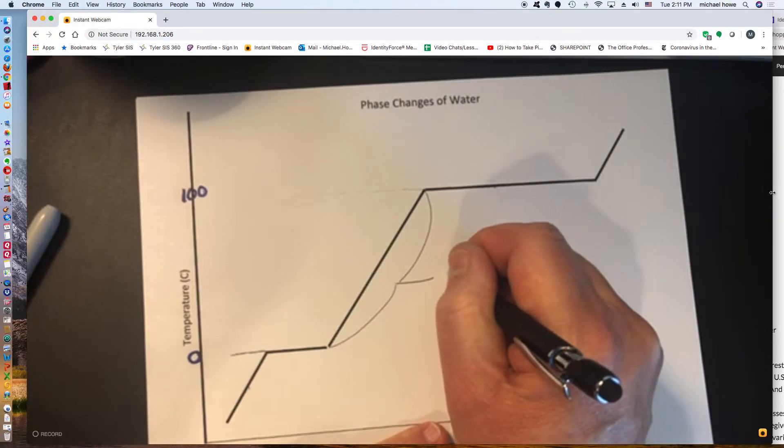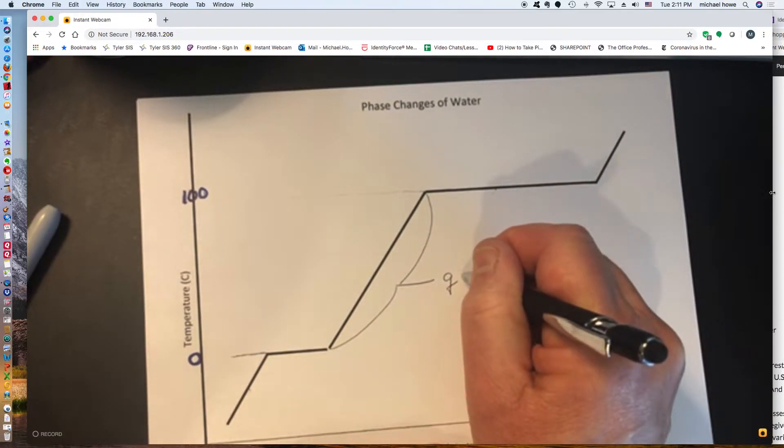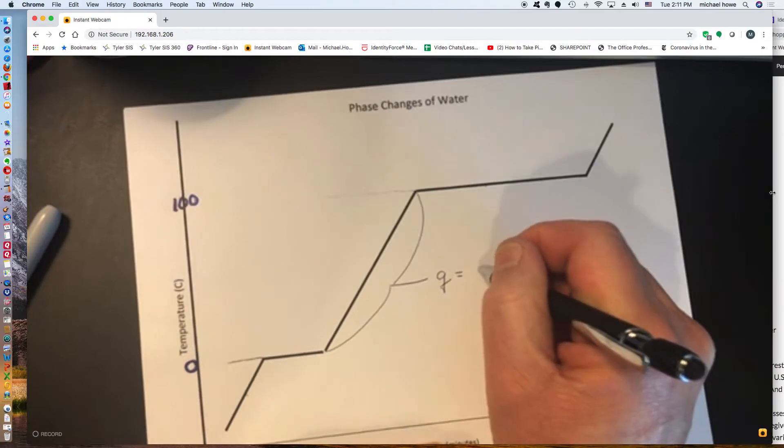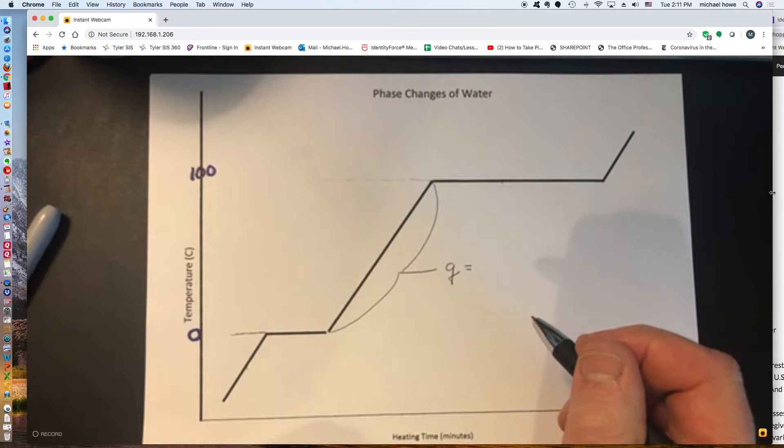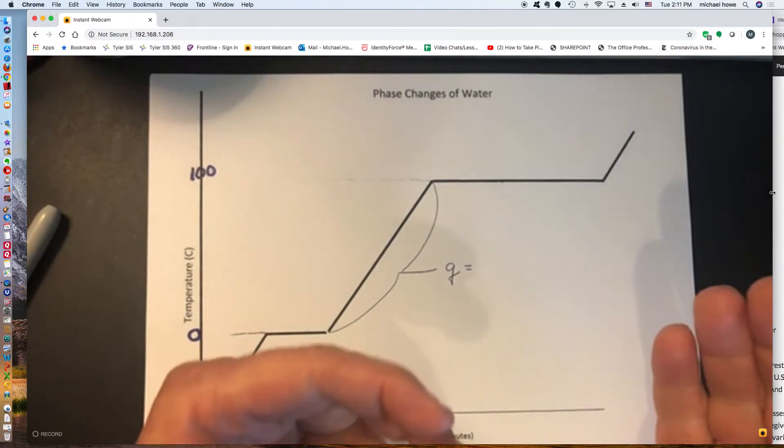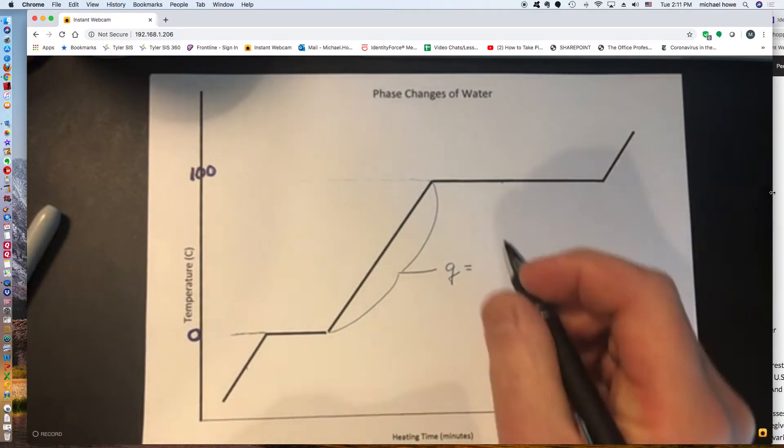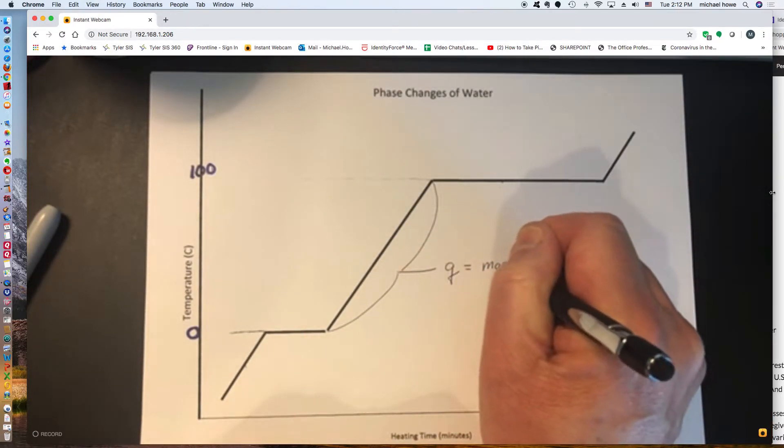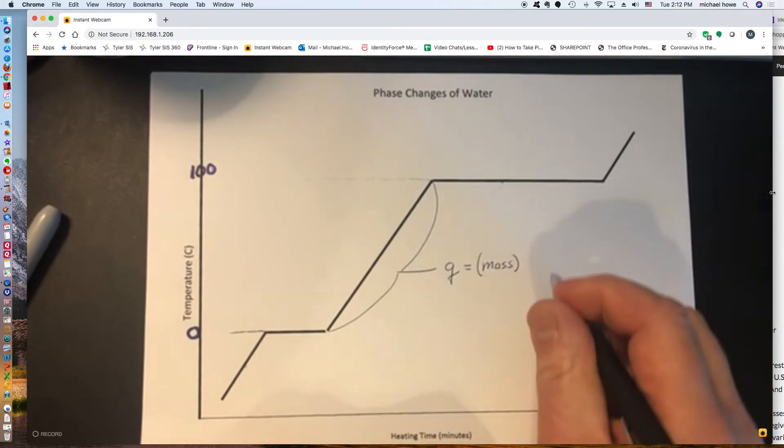The quantity of heat that it takes to raise the temperature of something is really related to three different factors. The first is how much water you're actually going to be heating. So what's a normal unit that we use in chemistry to mean how much? It would be mass. Mass is always measured in grams.